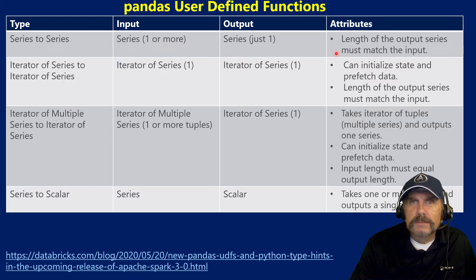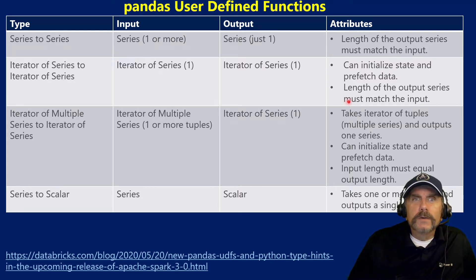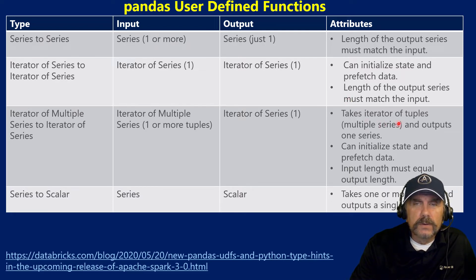The biggest rule about series to series is that the length of your input and output arrays must match — 10 elements going in means 10 elements coming out. Then we have iterator of series to iterator of series. The word iterator is key there, because now you're going to use a Python iterator to step through the elements, and that gives you some more control.